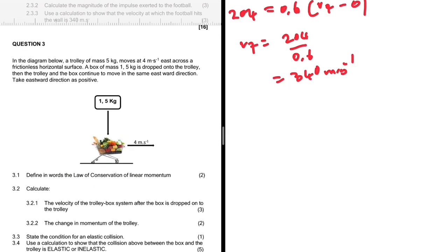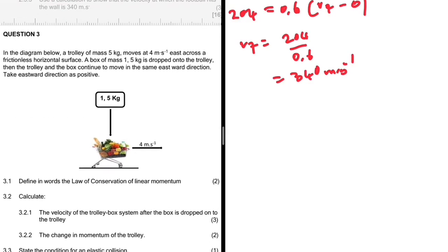Let's take a look at question three. In the diagram below, a trolley of mass 5 kg moves at 4 meters per second east across a frictionless horizontal surface. A box of mass 1.5 kg is dropped onto the trolley.